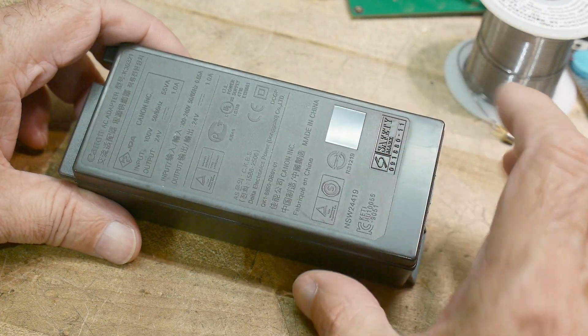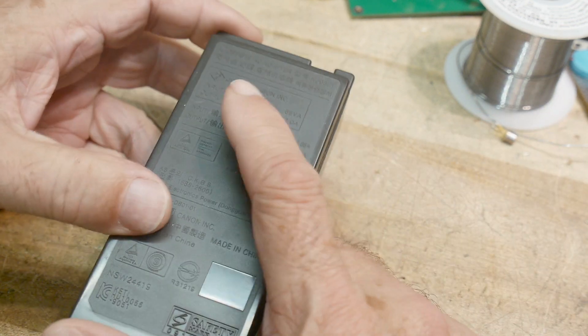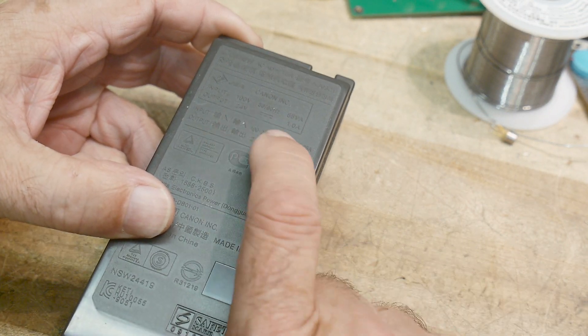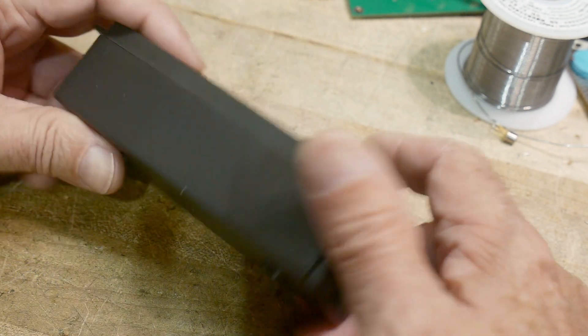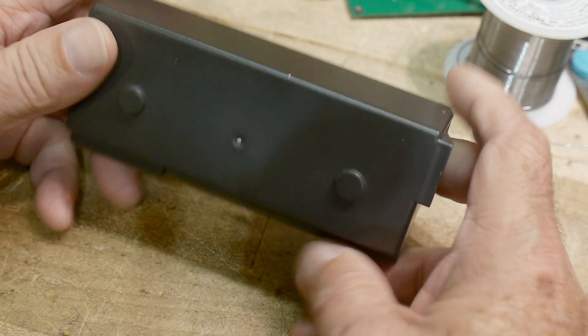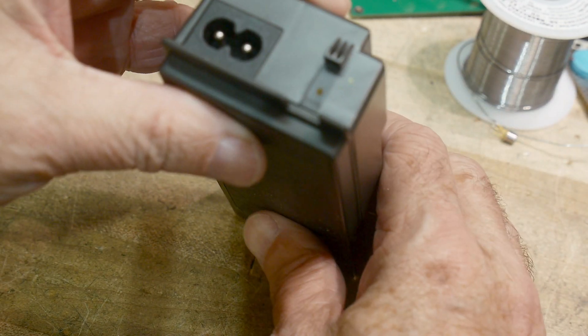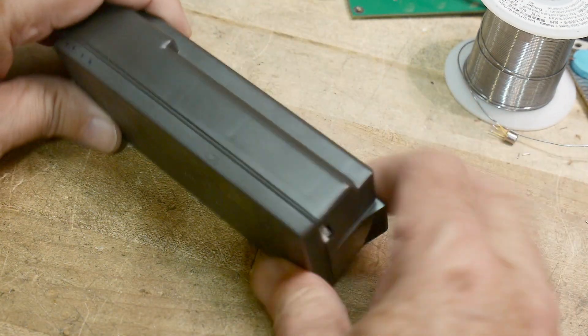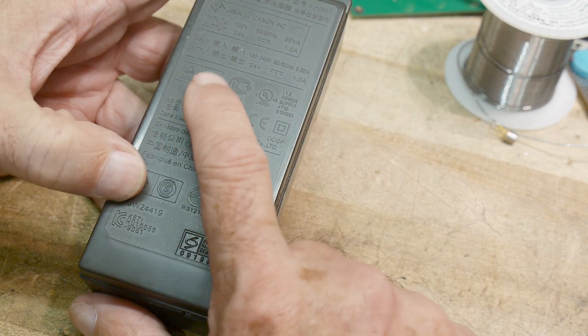All right, this is the power supply out of that Canon printer that I took apart. It's got a funny power supply - it is 24 volts at 1 amp DC and it's a sealed unit, so I guess they could pop these in and out. It has just an AC cord and a DC connection. Input is 100 to 240 volts, so it's international.